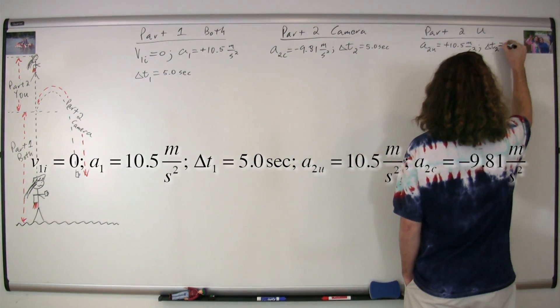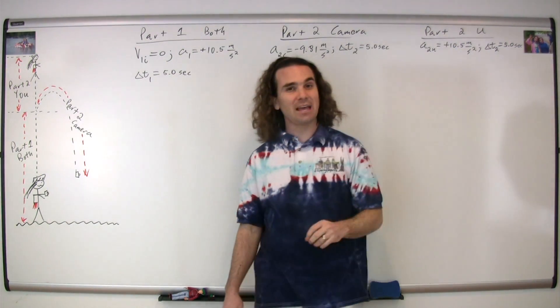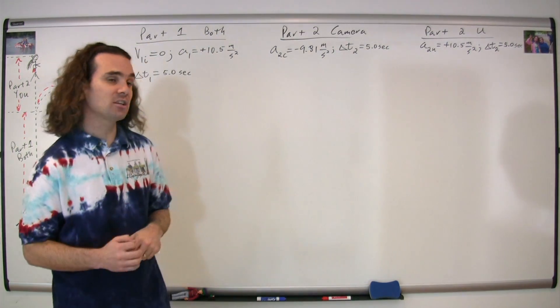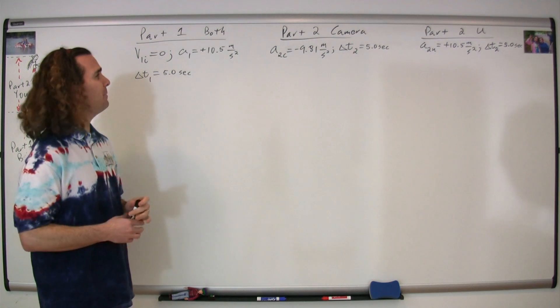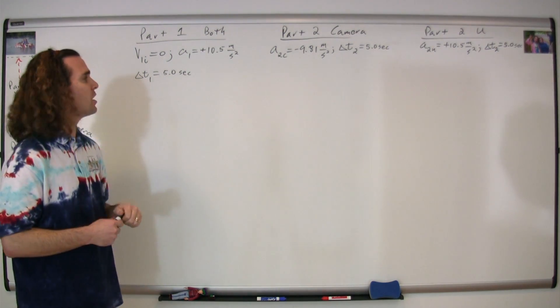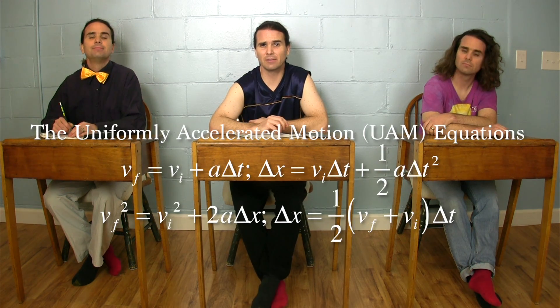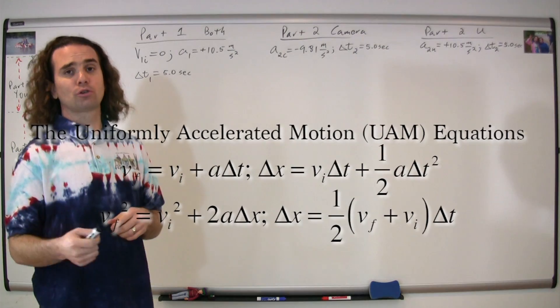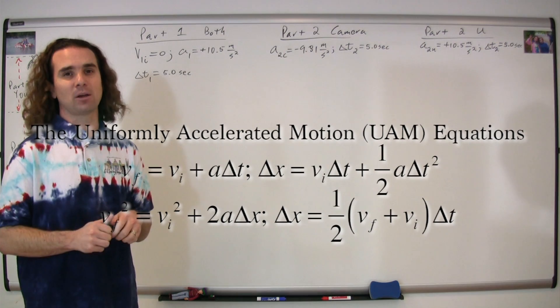We also know the change in time for Part 2 is 5.0 seconds, and that's independent of an object, so we don't need a subscript to identify which object that change in time is for. Looking at just our known variables, in each part of the problem the acceleration equals a number, so we can use our uniformly accelerated motion equations — UAM equations — to solve this.